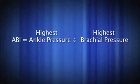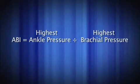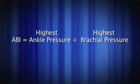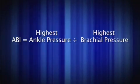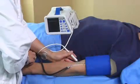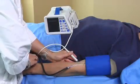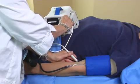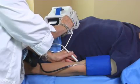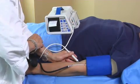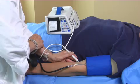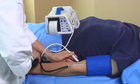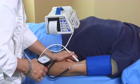To calculate the ABI, divide the highest ankle systolic pressure by the highest brachial pressure for the index. The concept we are following is that the brachial pressures represent the systemic blood pressure. If one arm pressure is higher than the other, there may be subclavian artery obstruction on the side with the low pressure. Therefore, we use the higher of the two arms as our reference for the most accurate systemic pressure.